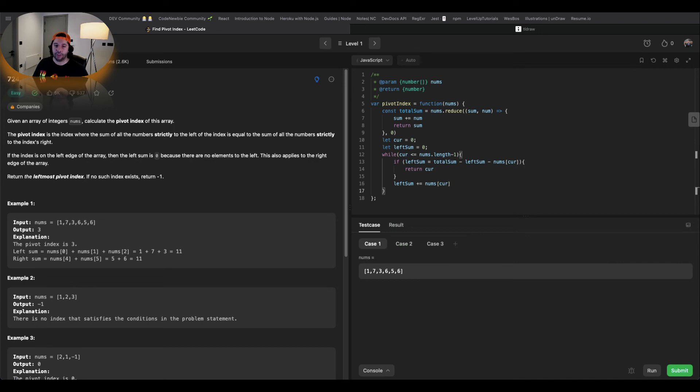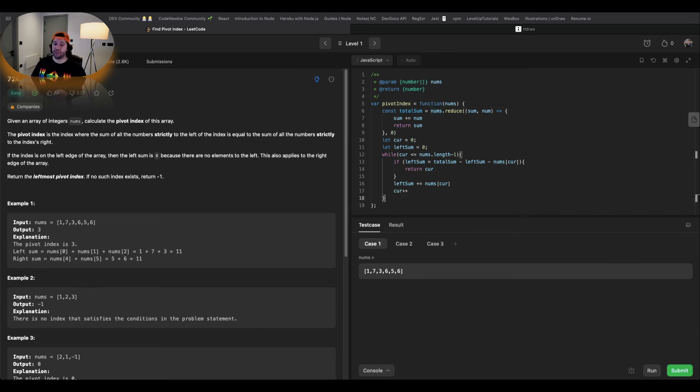And in order to do that we're going to say left sum plus equals nums of current. And we need to increase also the value of the current so that's going to be to increment it because that's our pointer. And outside of that loop I'm going to return minus 1 which is the case where we haven't found the pivot index or aka there is no pivot index. Super. Let's run that.